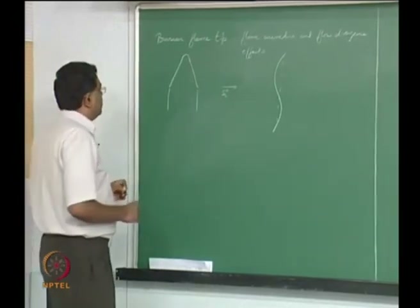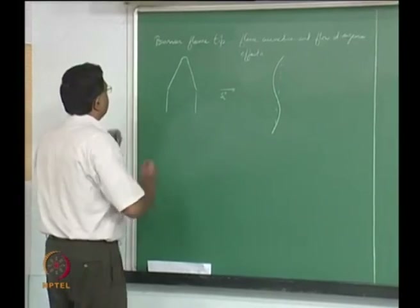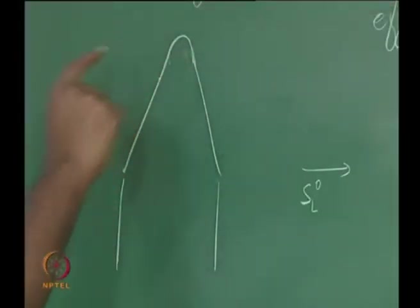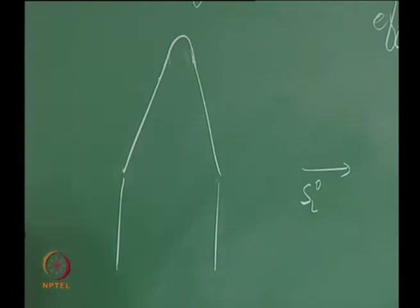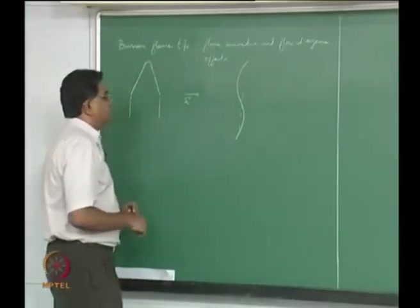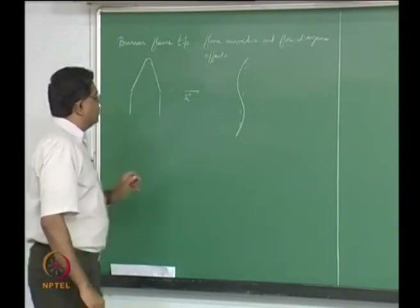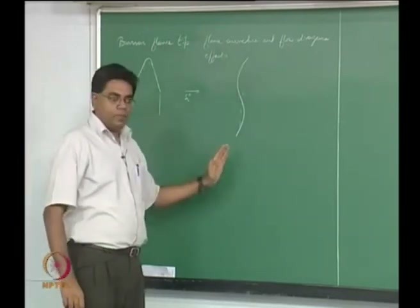We now have to think about a locally highly curved flame at the tip and see what happens. We want to think about flame curvature and also another aspect called the flow divergence effect, in the context of a small perturbation to a plane flame.